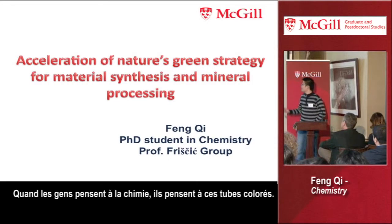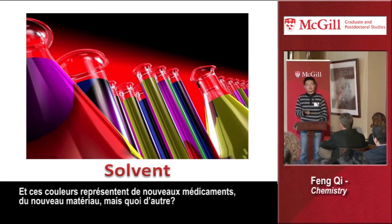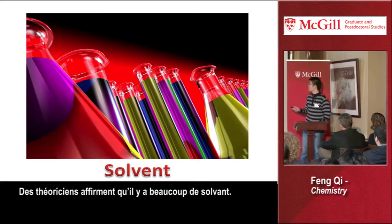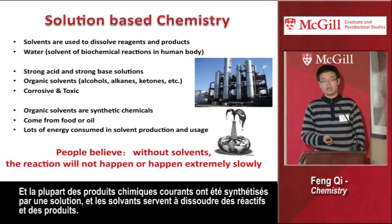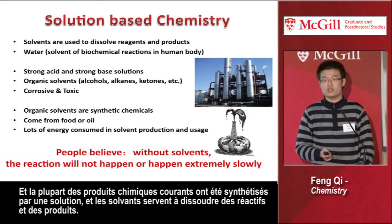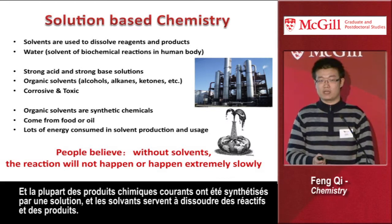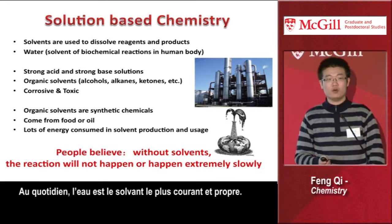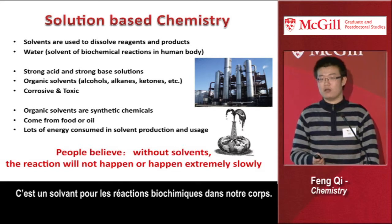Thank you, Dr. Barrett. So when people think about chemistry, they think about those colorful tubes. And those colors seem to represent new drugs, new materials. But what else is in the tubes? The answer is a lot of solvent. Most of our daily chemicals have been synthesized by solution-based chemistry. Solvents are used to dissolve reagents and products. In our daily life, the most common and clean solvent is water — water is the solvent for the biochemical reactions in our human body.